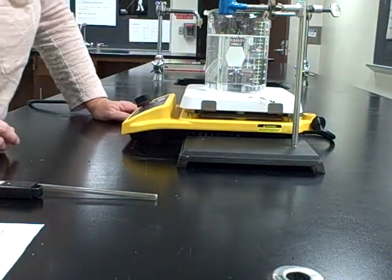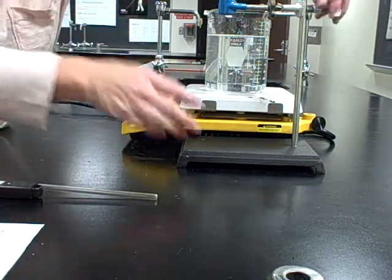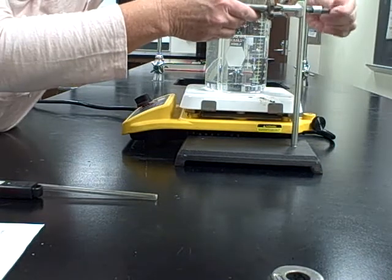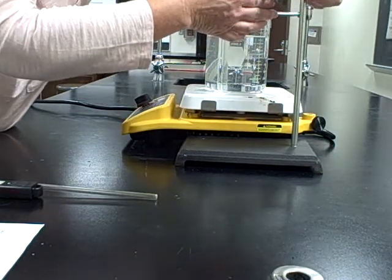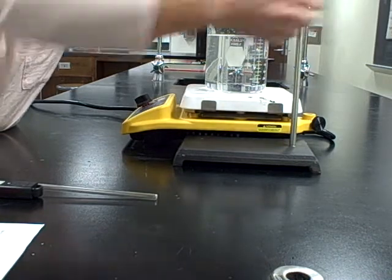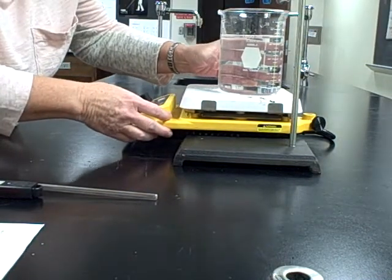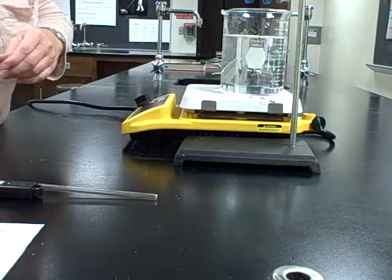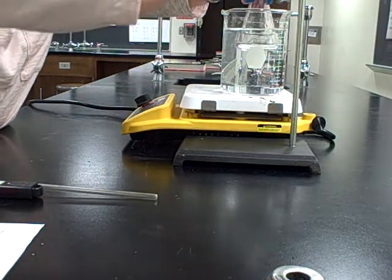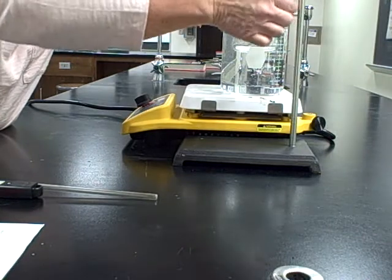I'm going to want my beaker on my hot plate to be heating it up. So I've got my ring stand right next to it. If I loosen here, I can turn this around so I can clasp my flask and I'm going to have to slide this over to the edge. Right now I don't have anything in my flask. I'm just looking to see that I can attach it here.